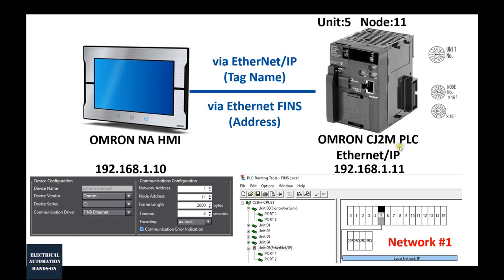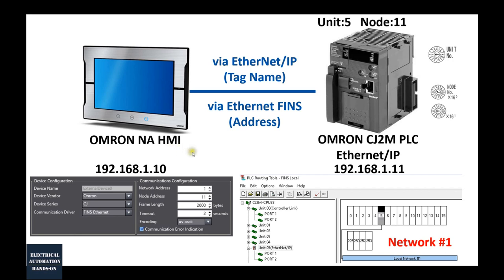The Omron CJ2M PLC needs to use the CX1 software — the actual program software is CX Programmer. But the Omron NA HMI uses the Sysmac Studio software. So they are not using the same software. Basically, these are two main software groups.